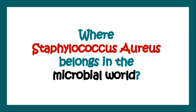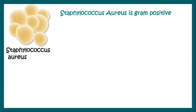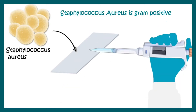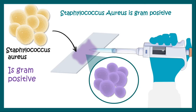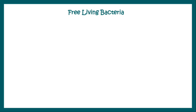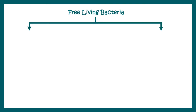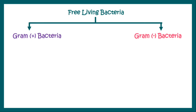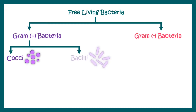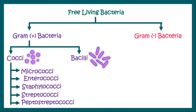Let us understand where Staphylococcus aureus belongs in the microbial world. Staphylococcus aureus is a gram-positive organism, so if we do a gram staining of a Staphylococcal smear, it will appear as purple cocci. Free-living bacteria can be classified based on gram staining into gram-positive and gram-negative organisms. Gram-positive organisms can be round-shaped or cocci, or rod-shaped or bacilli. In gram-positive cocci, we have several groups like micrococci, enterococci, staphylococci, streptococci, and peptostreptococci.